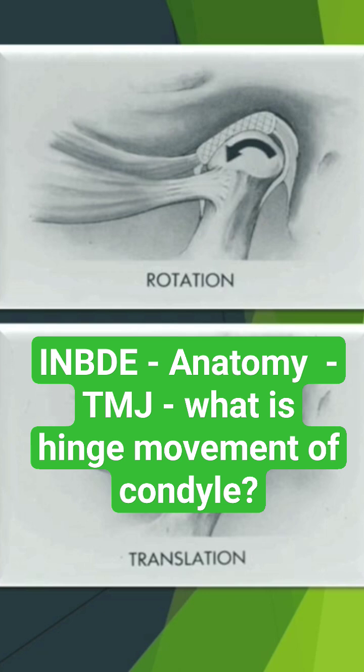When you try to open beyond 25 millimeters — from 25 up to 40 or sometimes up to 60 millimeters — you have translation, where the condyle moves against the posterior slope.